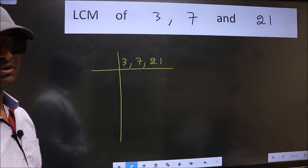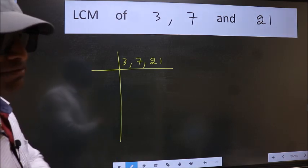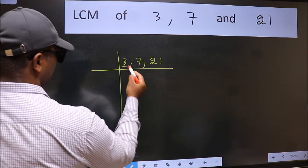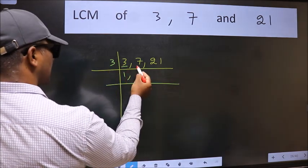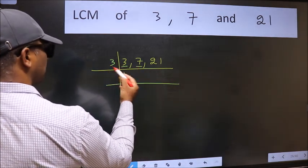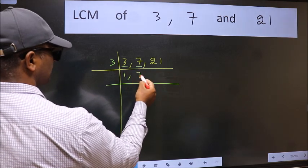Now we should focus on the first number which is 3 here. 3 is a prime number. So 3, 1 is 3. The other number 7, not divisible by 3, so we write it down as it is.